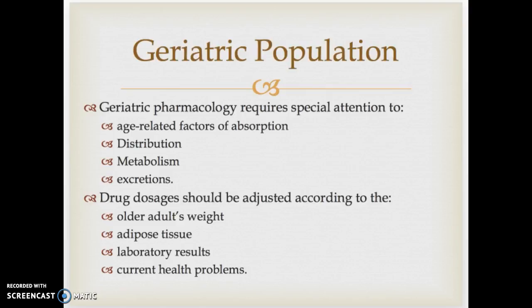Unlike the pediatric population, where we dose drugs based on weight up until a certain weight, for the geriatric population, drugs are dosed based on a multitude of things: the adult's weight, the adipose tissue available, certain laboratory results which indicate organ function, and other current health problems. We know aging adults are oftentimes on multiple medications, so we have to look into and make sure we're not having any type of interactions.